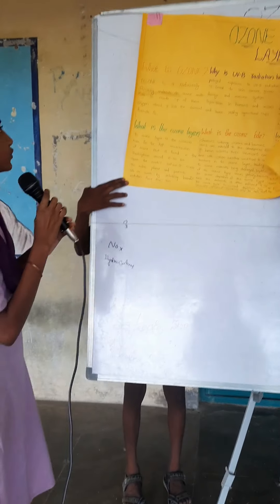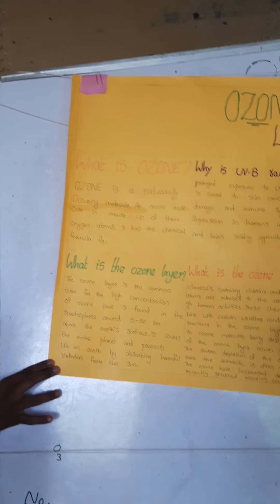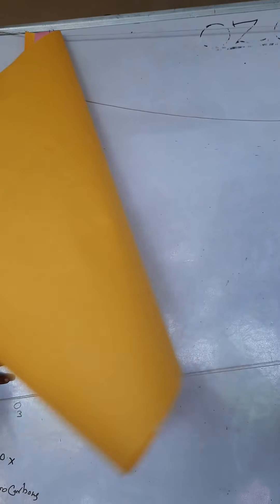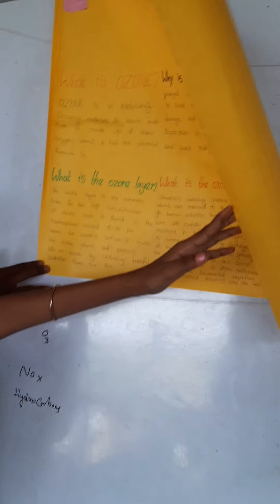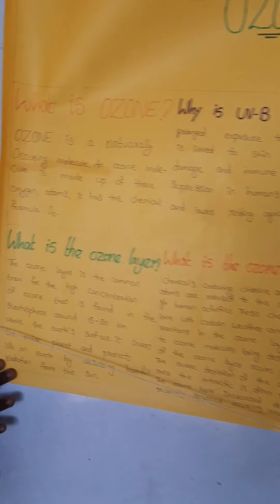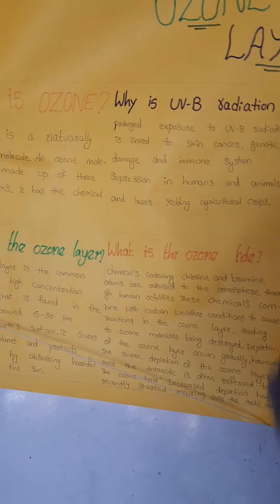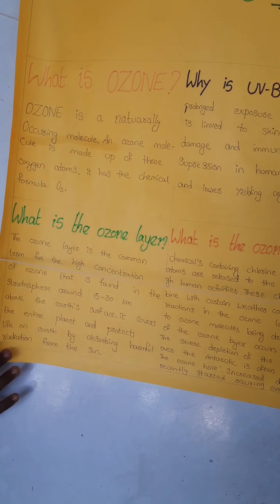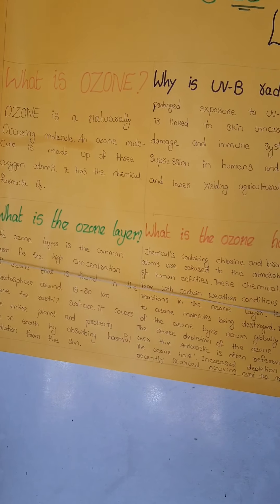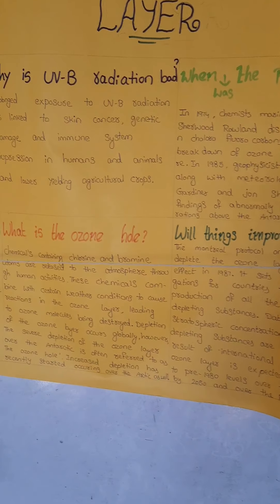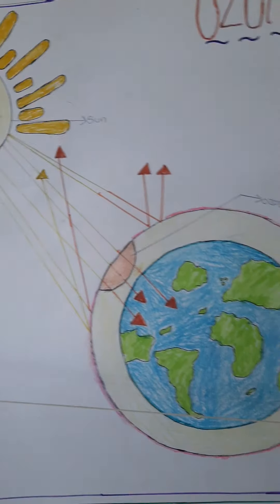What is ozone? Ozone is a naturally occurring molecule made up of three oxygen atoms. It has the chemical formula O3. What is the ozone layer? The ozone layer is the common term for the high concentration of ozone that is formed in the stratosphere, around 15 to 30 kilometers above the earth's surface. It covers the entire planet and protects life on earth by absorbing harmful radiation from the sun.